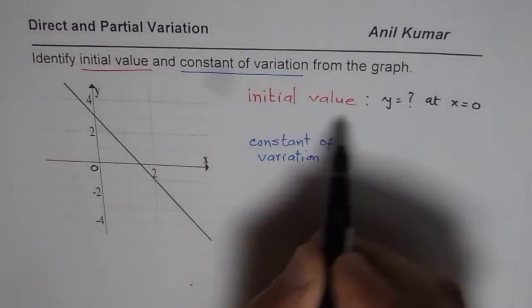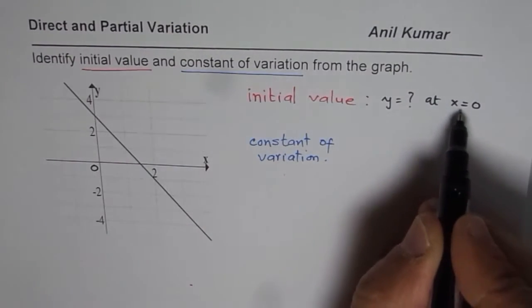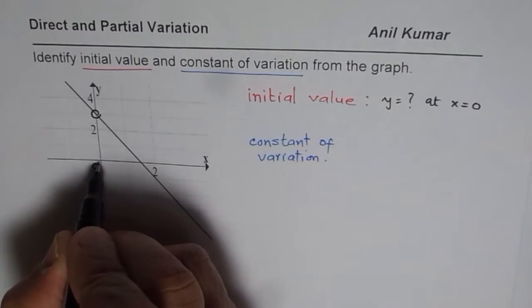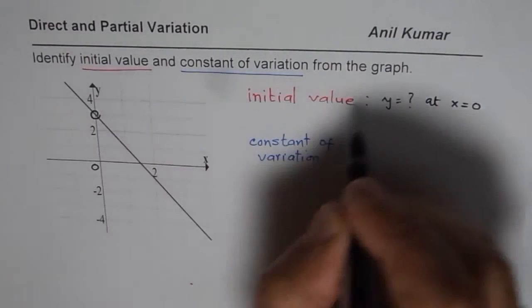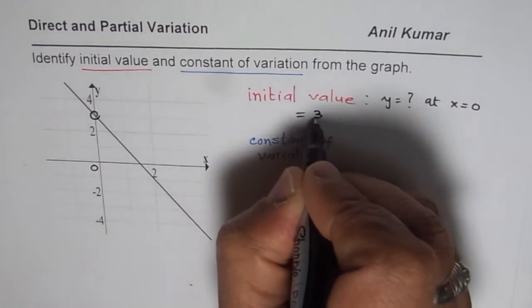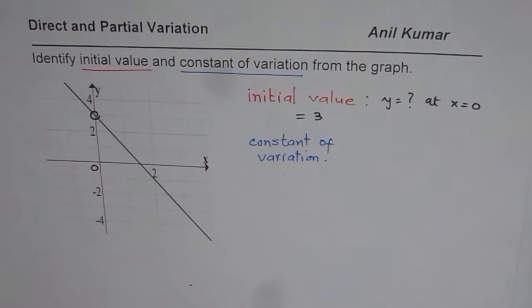The value of the function or relation at x = 0. Here we can read that value. The initial value at x = 0 is 3. So in this case, initial value equals 3. That is how you get initial value.